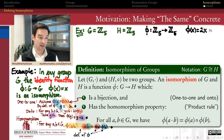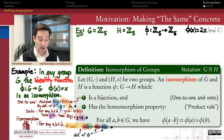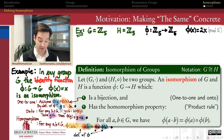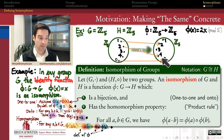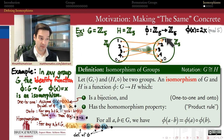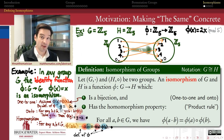Let's take the group Z₅ and Z₅ again. I want to show this group is the same as itself, but with an isomorphism that's not the identity function. The function Φ(x) = 2x mod 5 — the doubling function on Z mod 5 — is actually an isomorphism from this group to itself. Let's visualize why it's a bijection: 0 maps to 0, 1 maps to 2, 2 maps to 4, 3 maps to 6 ≡ 1 mod 5, and 4 maps to 8 ≡ 3 mod 5. The arrows diagram shows it is indeed a one-to-one correspondence.